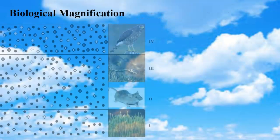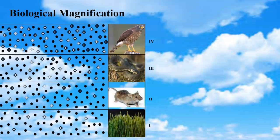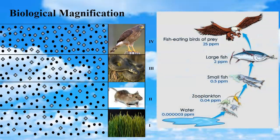Biological magnification describes how pollutants are amplified at higher levels of the food chain. In this diagram, grasses have a little pollutant; a mouse eats a lot of grass and accumulates more toxins; a snake eats many mice and accumulates even more; and a hawk, eating many snakes and mice, has the highest concentration of toxins in its tissues. The higher-level organisms on the food chain are most impacted — and that's important for us because we eat higher up on the food chain.